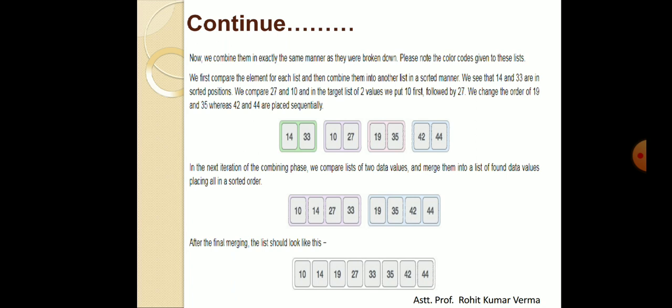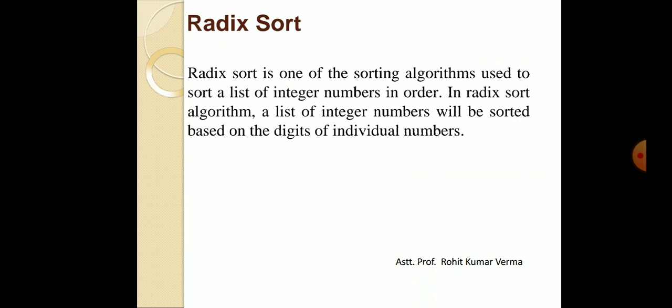Now we are covering another type of sorting in data structure, and that is radix sort. Radix sort is used to sort a list of integer numbers in order. In the radix sort algorithm, a list of integers will be sorted based on the digits of individual numbers.